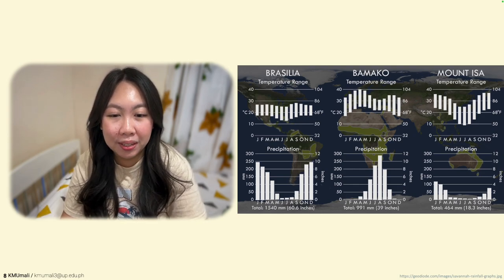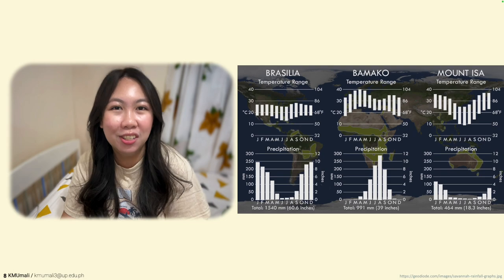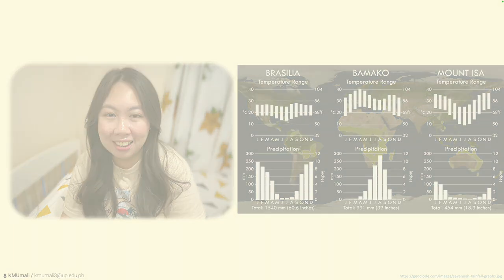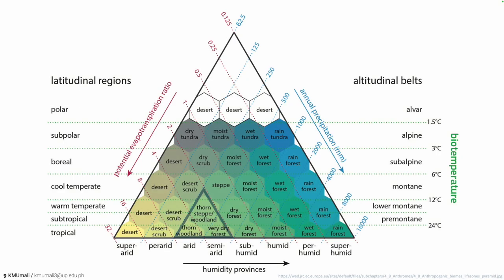All are within the tropics and have a distinct wet and dry season, which is characteristic of a savannah. Here is the Holdridge Life Zones chart, where we can find the savannah to the left of the tropical forests, where annual rainfall is reduced and is between the thorn steppe or woodland, or very dry forest. However, the savannah is unique in that it experiences quite long periods of drought.